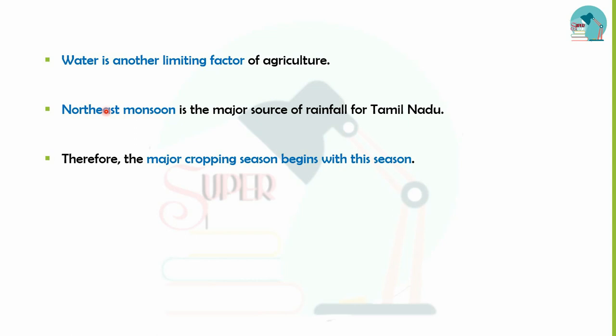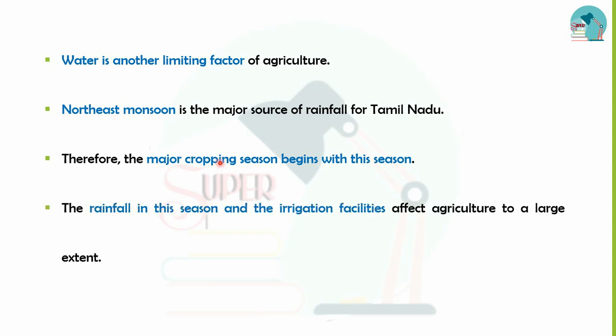In Tamil Nadu, the major source of rainfall is the North East Monsoon. During that time, the major cropping season begins, dependent on rainfall and irrigation facilities.